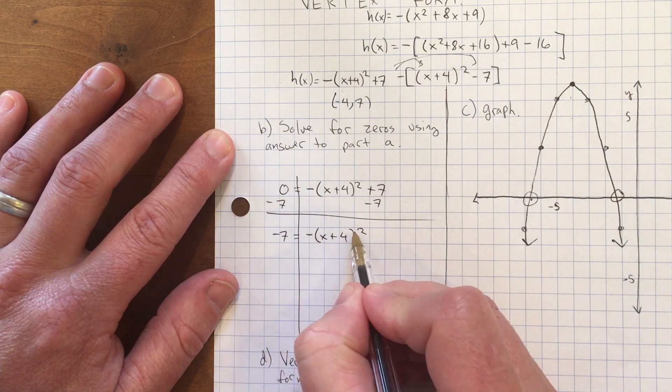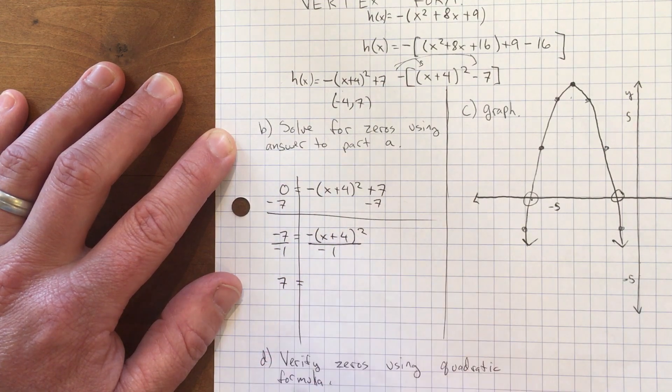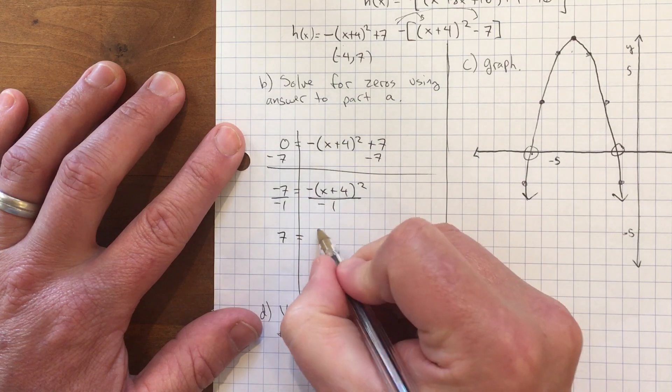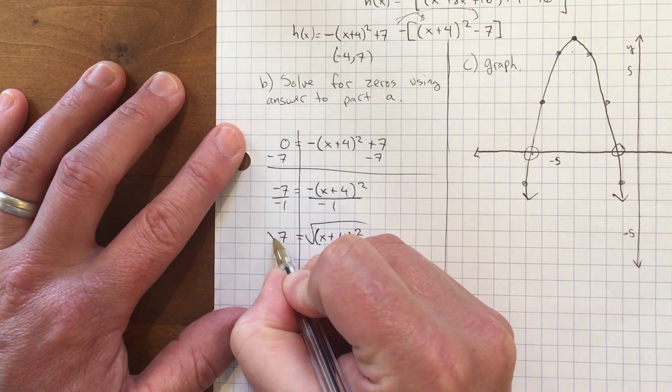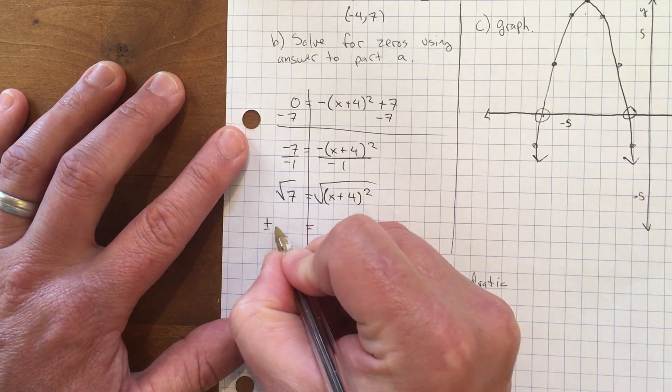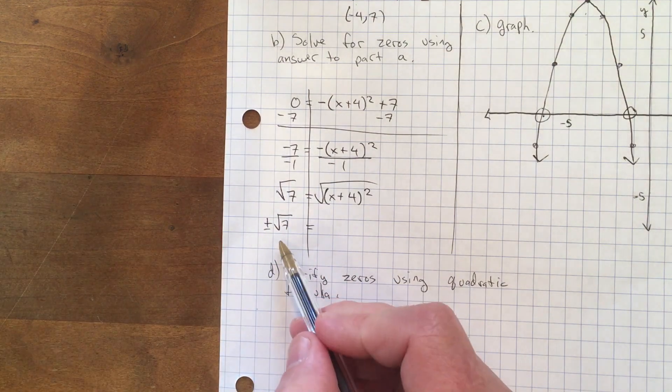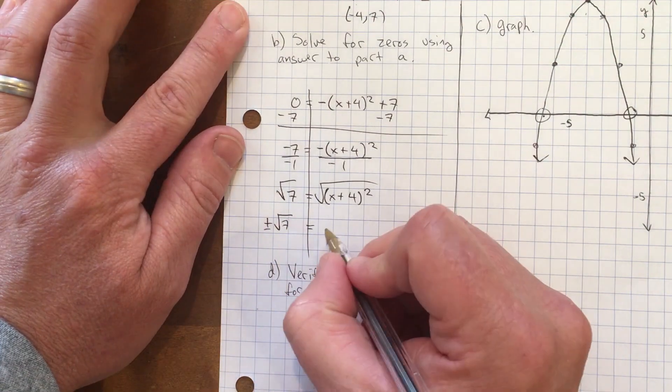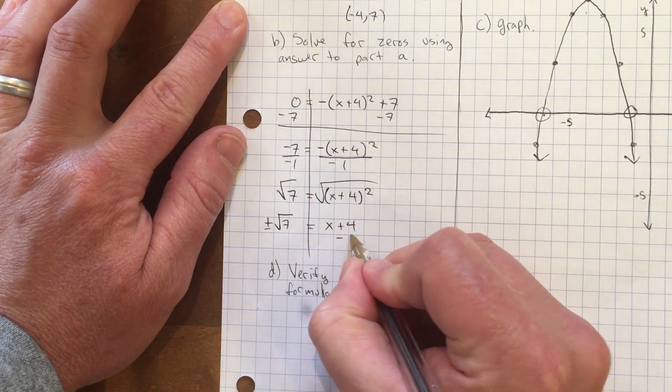I need to get rid of that negative symbol so I can square root this. I'll divide everything by -1, then I get 7 = (x + 4)². Now I'll square root both sides. The square root of 7 is ± √7, which is like 2 point something, but I'll just leave it like this.